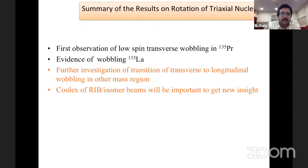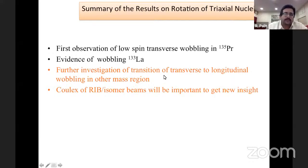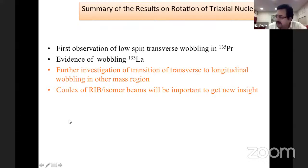In summary for triaxial nuclei, further investigations are required for the transition from transverse to longitudinal wobbling mode in other mass regions. There are interesting results coming from the mass 180 region, and in future we will be able to do COULEX experiments to study exotic nuclei with isomer beams to understand triaxial shapes and the wobbling mode.